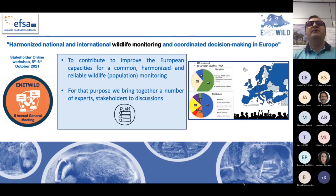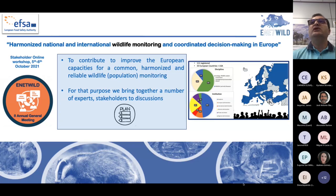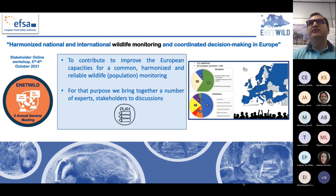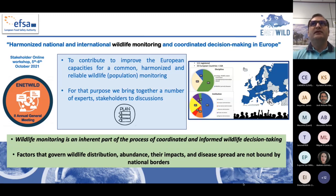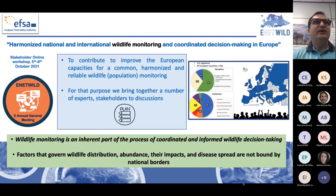To contribute to improving European capacities for a common, harmonized and reliable wildlife population monitoring, we brought together a number of experts and different stakeholders for discussions in October 2021 in online discussions. The representativity of Europe was good, as you can see in this map. But also the representation of different disciplines and different institutions was good. The underlying statements of all discussion were that wildlife monitoring is an inherent part of coordinated and informed wildlife decision-making, and that factors determining wildlife distribution, abundance, and their impacts — including disease spread — are not bound by national borders.